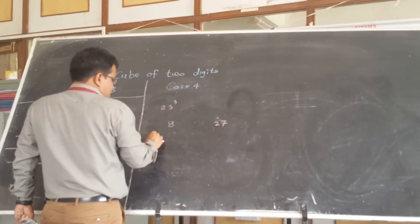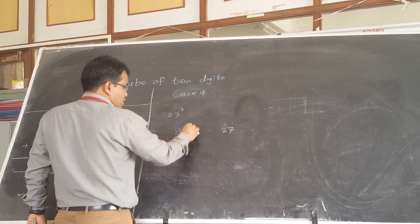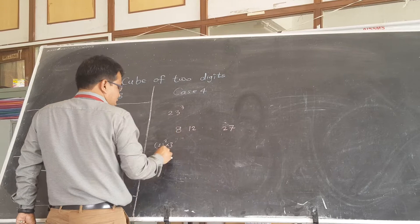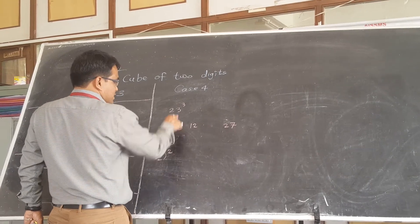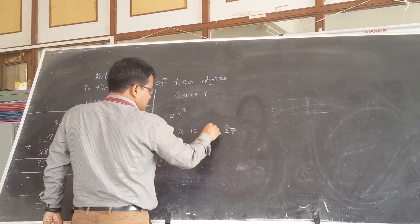Then take the square of the first digit and multiply it by the second digit. 4 into 3 is 12. Then take the square of the second digit and multiply it by the first digit. 9 into 2 is 18.